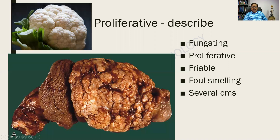Let us see how to describe a specimen. This is an amputated specimen of the penis. The glans penis, the prepuce and even a part of the shaft have been replaced by a large, proliferating, friable and foul-smelling growth, measuring several centimeters. This is analogous to a cauliflower — it looks almost exactly the same. So it is proliferating, friable; if you nibble at it, it will come off.